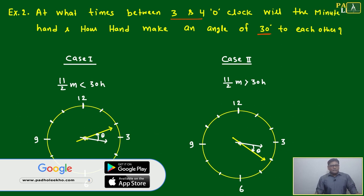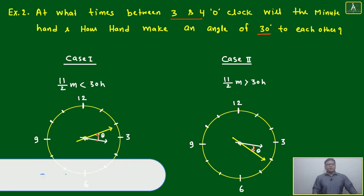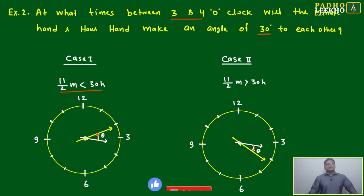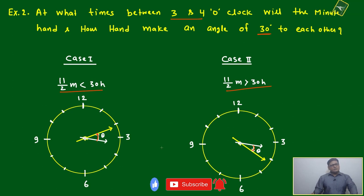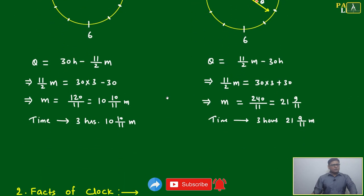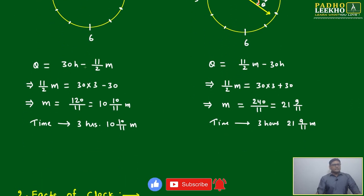One is 11 by 2 m is less than 3 by 8 h. Another is this. We'll apply both formulas. This 30 h minus... just apply hours equal to 3, minute equal to 30.